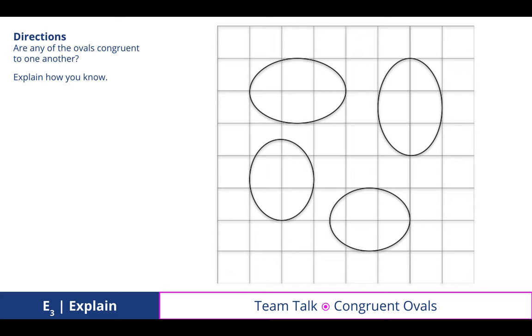And then we had a team talk activity where you all discussed which ovals were congruent. And it turns out that you all explained that the top two are congruent, despite the fact that it's rotated, because it has the same length or the longer direction, which is three units.